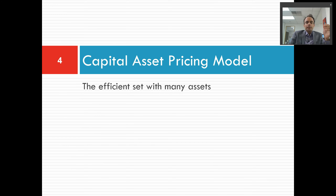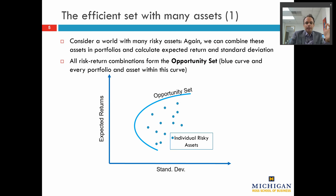Let's give you a bit of a history lesson behind the capital asset pricing model. This model was developed more than 50 years ago in the 1960s. Some very clever researchers — Sharpe, Lintner, and Mossin — were trying to understand why investors pay different prices for different assets.